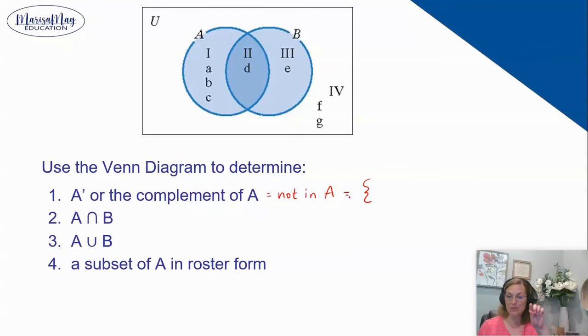We're using those curly braces. I want everything that's not in A. These items are in A, and this item's in A. This one is not, and neither are these two, so we'll list those. E is not in A, F and G are not in A either.